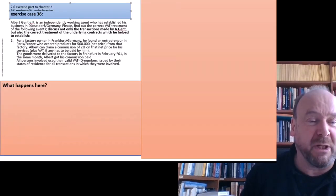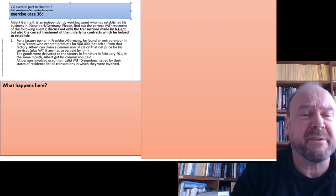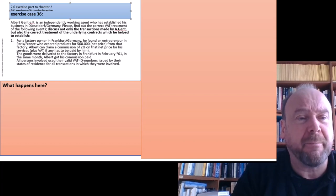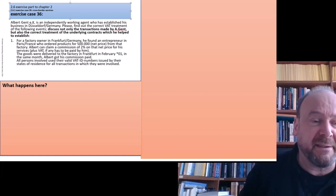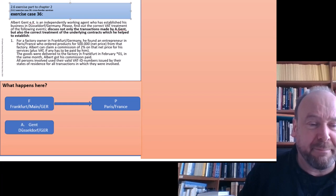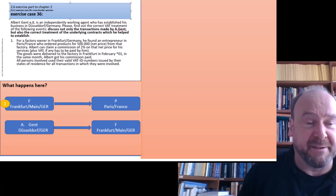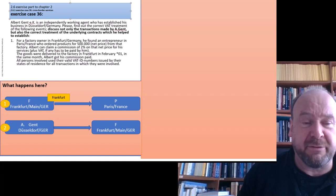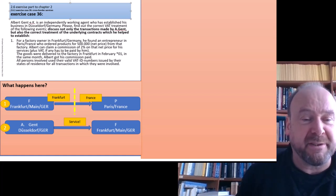Here is event number one. The best idea to analyze a case is first to look at who has a contract with whom. Under VAT law, you can only render services or deliver things to your contract partner. We have F in Frankfurt delivering something to P in Paris, and the agent based in Düsseldorf doing something for factory F in Frankfurt. The good goes from Frankfurt to France, crossing the border — that's transaction one. Transaction two is a service, so we don't need to think about the border.